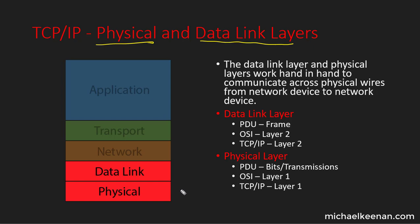The physical layer is layer 1 and the data link layer is layer 2 for both the TCP/IP and the OSI model. The data link layer and the physical layers work hand in hand to provide communication across the physical medium — the wires from one device to another on the network. The PDU for the data link layer is a frame, and for the physical layer the PDU is bits — the physical transmission over the media.